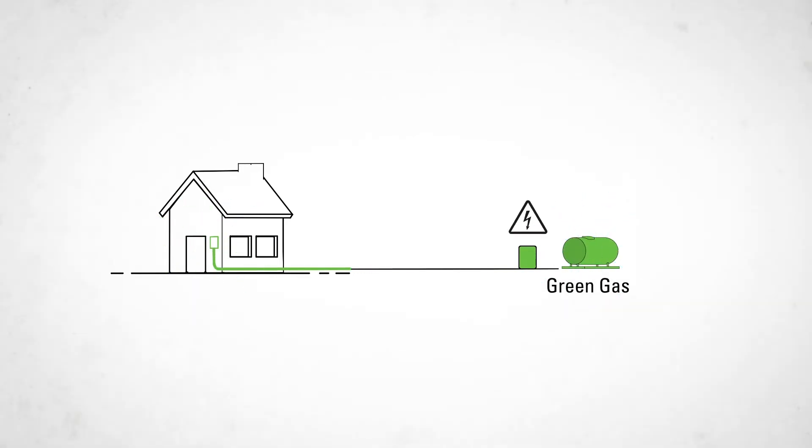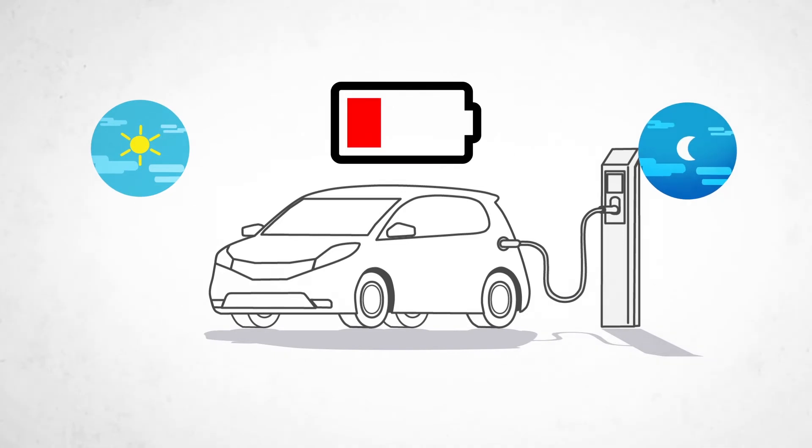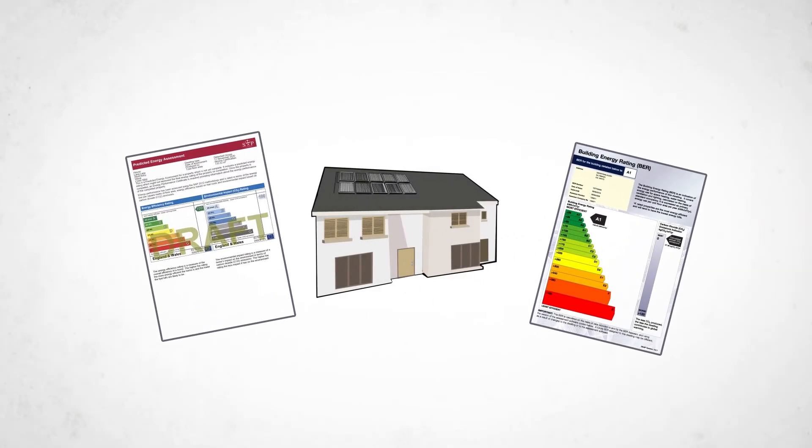You can even charge your electric cars at any time of the day or night. This is called the Hone Heat Power and Drive independent energy system. Now you are completely off-grid and have your own independent energy system with very low bills.